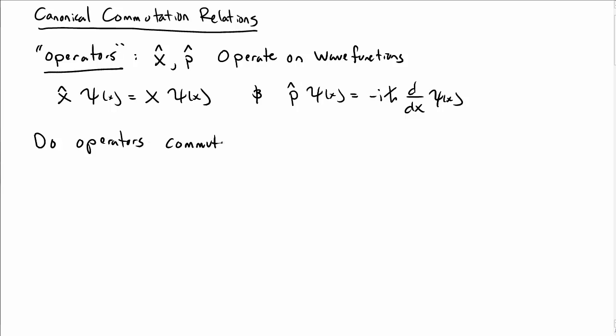One question we could ask is, do operators commute? Let's take a review of things that do and do not commute. Recall that real and complex numbers do, in fact, commute, by which I mean a times b equals b times a. The order doesn't matter.